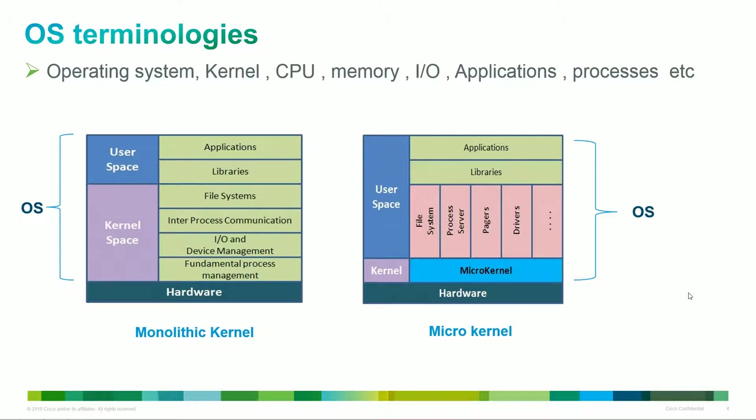Before we can understand what XR is, we have to understand what an operating system is. An operating system normally consists of the kernel, which is the core piece of software that allows interaction with the hardware — for example, the CPU, memory, applications, and processes. Our operating system controls what's in our kernel space and what's in our user space — software components that sit on top of the hardware so that users can interact with it.